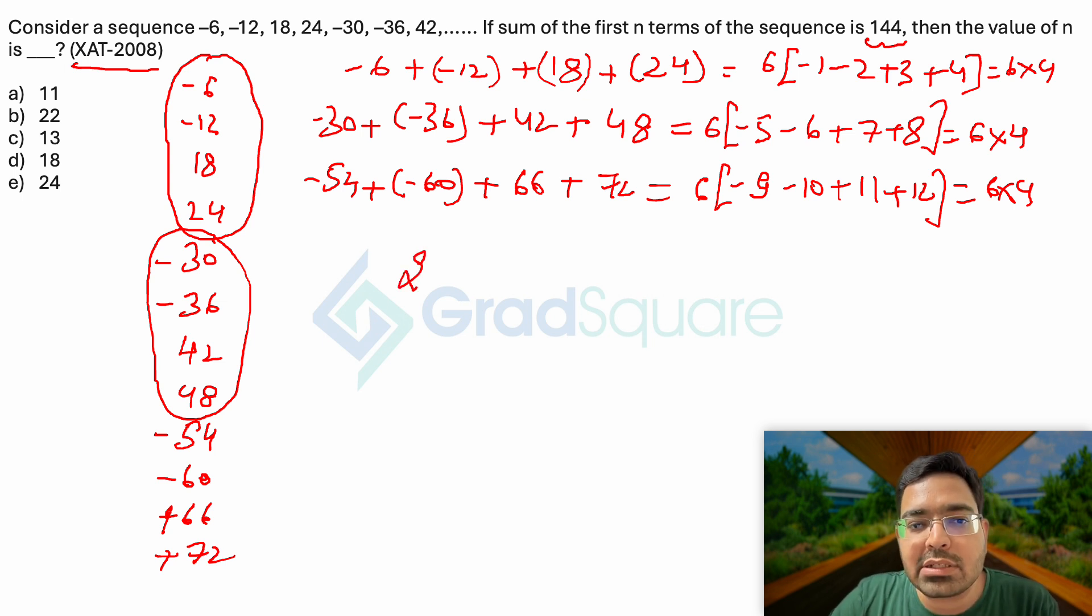I want the sum to be equals to 144. So 24 times the number of series that I am able to make, the number of combinations of consecutive 4 numbers in the series that I can make is what I am going to multiply 24 with. So 24 multiplied by A should turn out to be equals to 144.